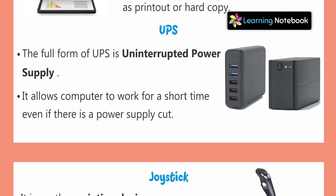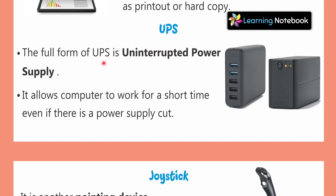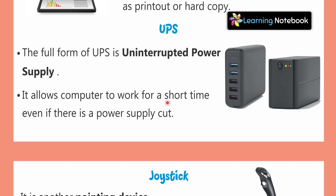The next part is known as UPS. The full form of UPS is Uninterrupted Power Supply. Look here — this is a UPS. It allows the computer to work for a short time even if there is a power supply cut. Since a computer is an electronic machine that runs on electricity, if we are working on the computer and the power is cut, with UPS we can still work on the computer for a short time.